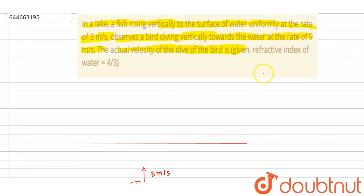And the bird is moving down with some velocity v₀. If you see here, it is given that the bird is diving vertically downward towards the water at a rate. The actual speed of the dive of the bird you have to calculate. This is the velocity of the bird with respect to the fish, right?